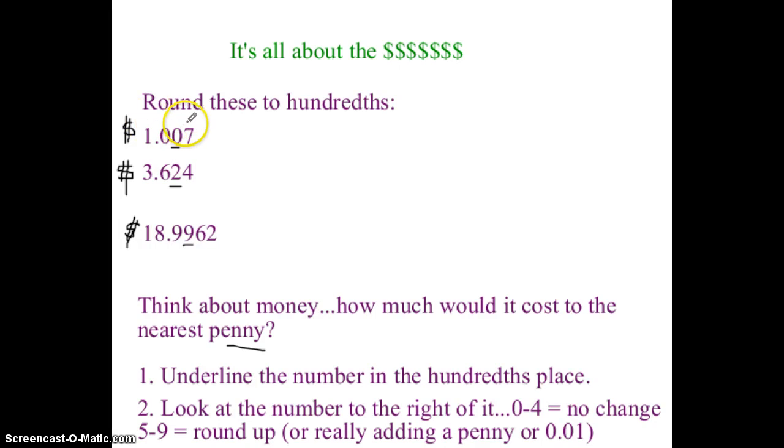So how do you know if you round it up or not? You look at the number to the right of it. So I have a seven. And if that number is five through nine, you round up. Or what you're actually doing, sometimes it helps to know why or how it works, you are actually getting rid of the seven and you're adding one hundredth or one penny. And your answer is a dollar and one cent.